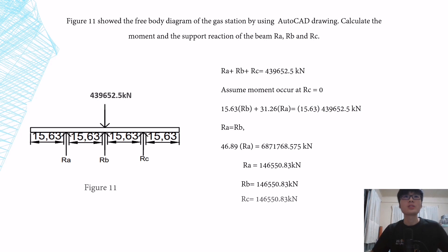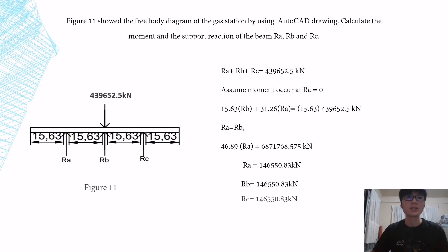The figure shows the free body diagram of the gate station using an AutoCAD drawing. We calculate the moment and the support reactions of the beam: RA, RB, and RC. After we calculate the moment, RA, RB, and RC have the same reaction, which is 146,550.83 kN.